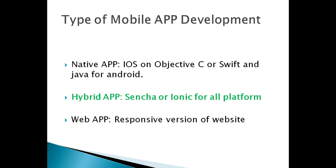The third type of app development is web app, which is just a responsive version of a website. The disadvantage with web app is we can't interact with the device as well as we can in native app or hybrid app.